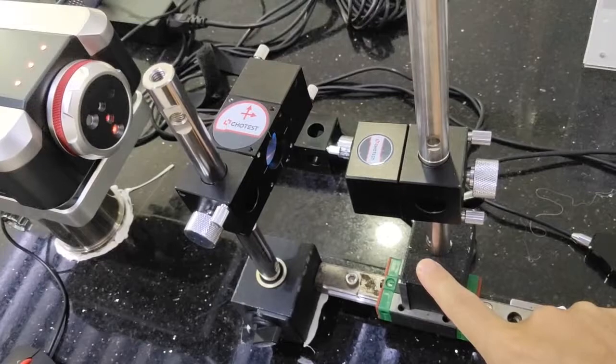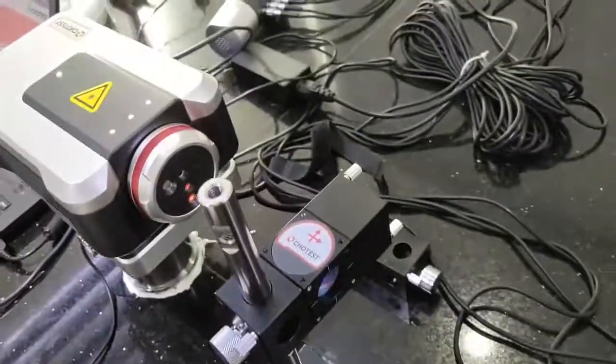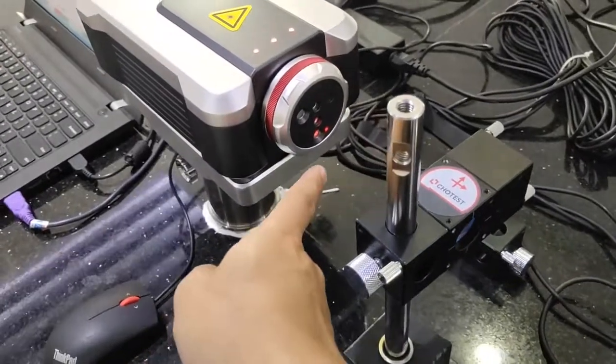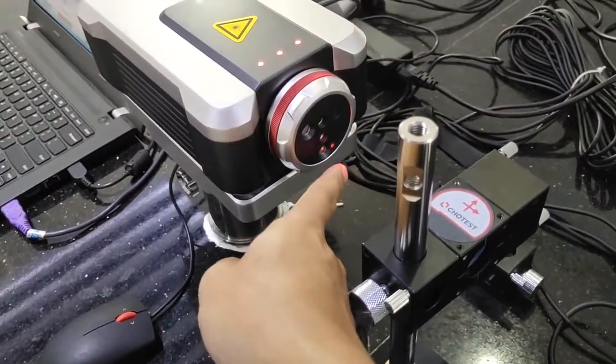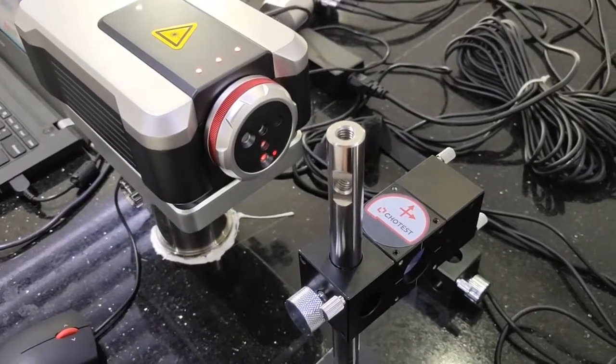Move the reflector from near side to far side. Now we see the beam from reflector is out of the hole. Now we need to adjust the yaw and pitch.